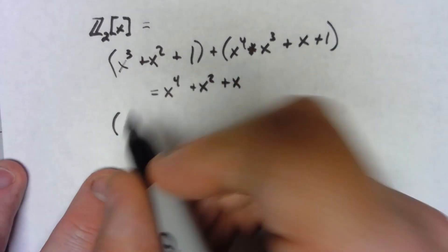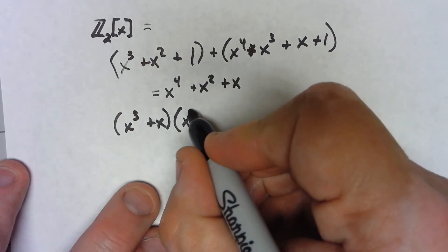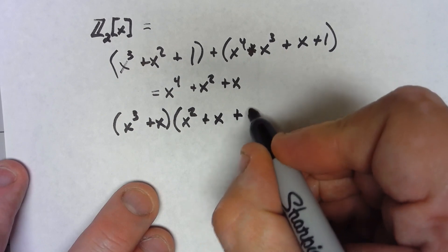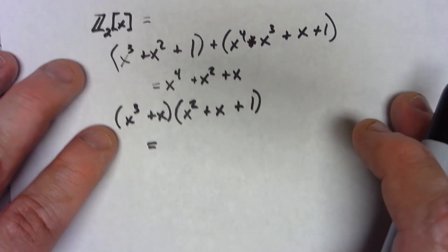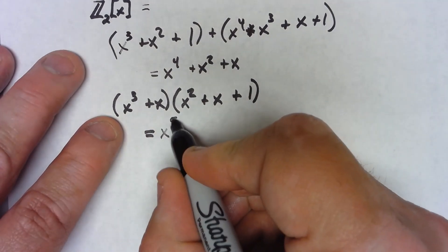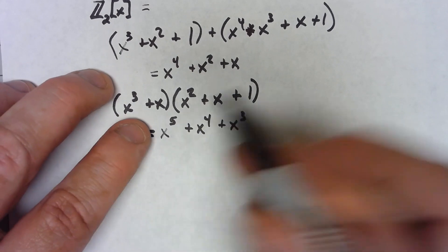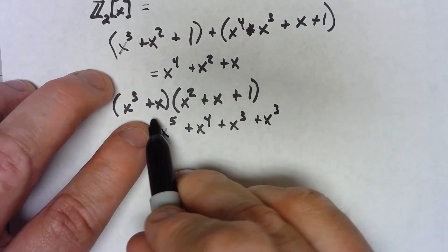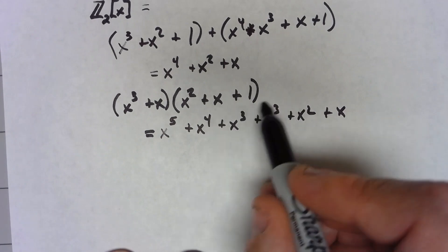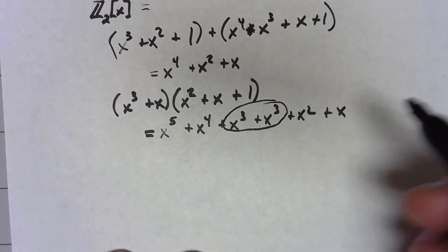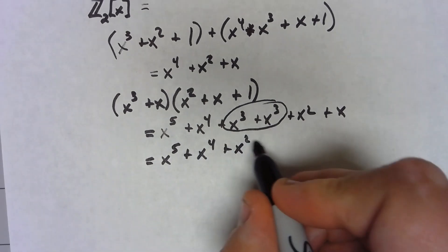Similarly, if I have something like x cubed plus x, and I'm going to times it by x squared plus x plus 1, I'm going to basically foil it out just like you would a normal thing. So we're going to have x cubed times x squared is x to the fifth, x cubed times x gives me x to the fourth, x cubed times 1 gives me x cubed, x times x squared gives me another x cubed, x times x gives me an x squared, x times 1 gives me an x. And then when I combine like terms, once again I'm adding them, taking the coefficients in Z2. So x cubed plus x cubed plus x cubed is going to give me 0, and this thing is x to the fifth plus x to the fourth plus x squared plus x.